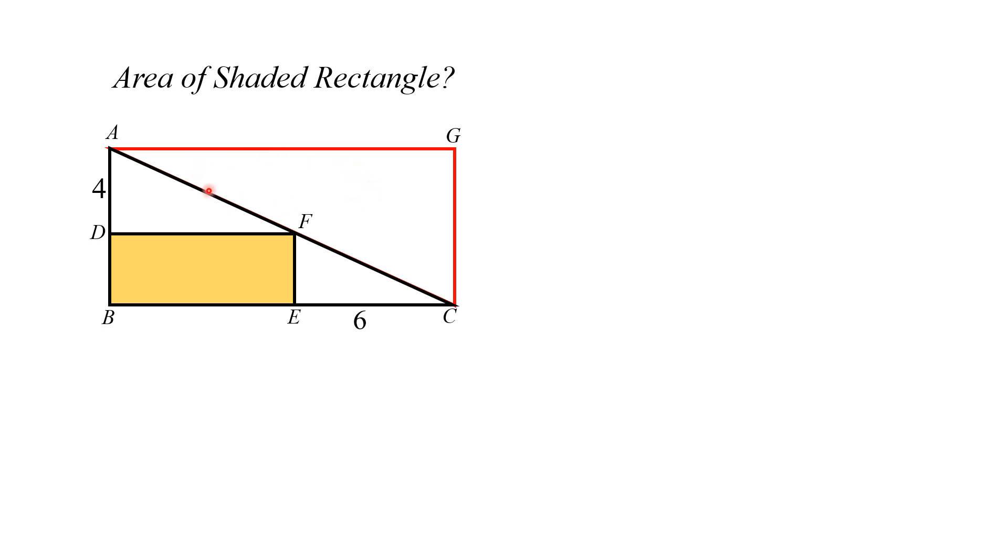Now you can see that ABCG is a rectangle and AC is its diagonal. We know that the diagonal always divides the rectangle into two equal parts, which means area of triangle ABC is equal to area of triangle AGC.